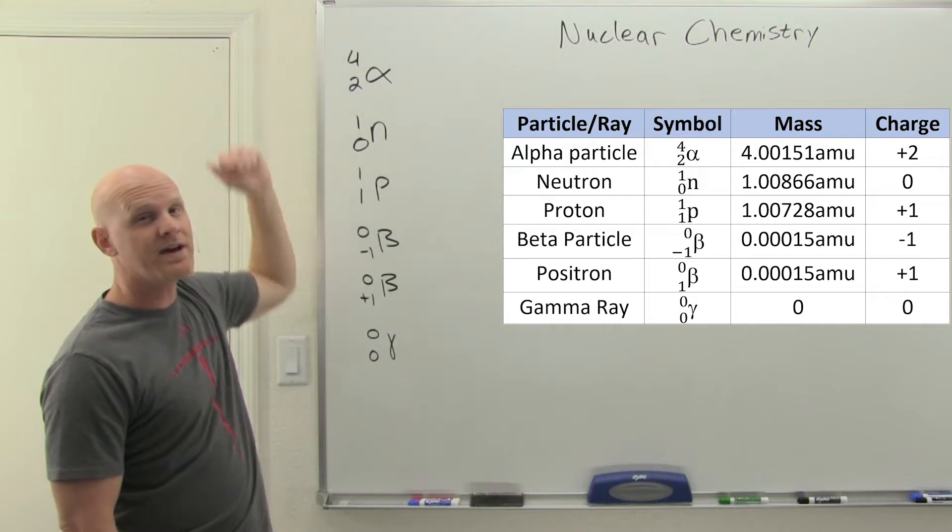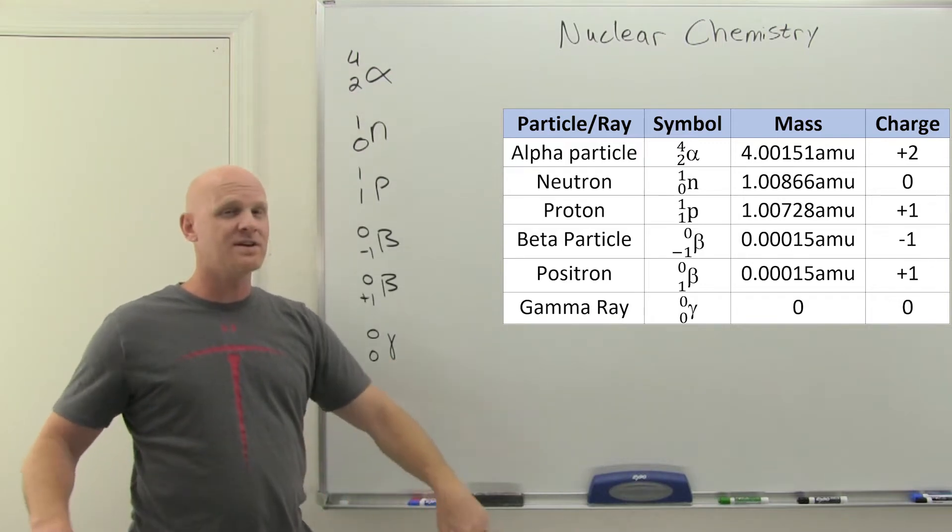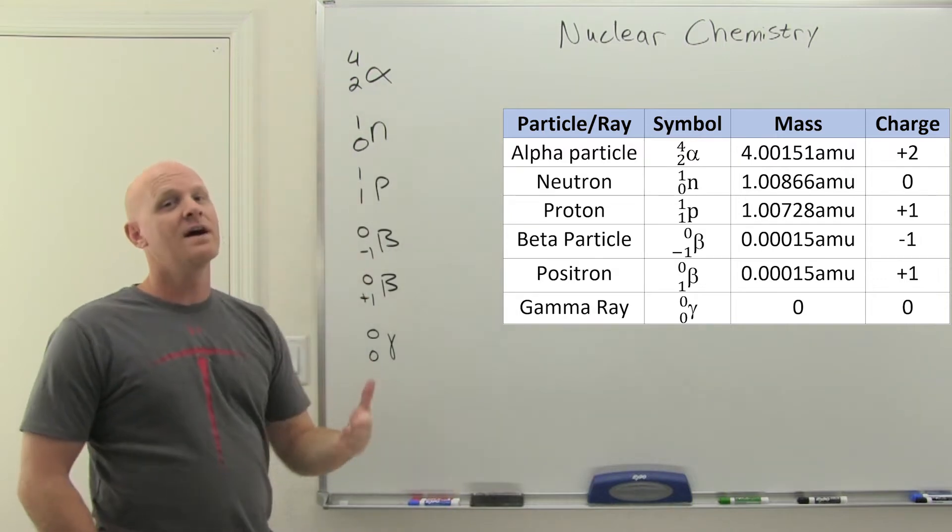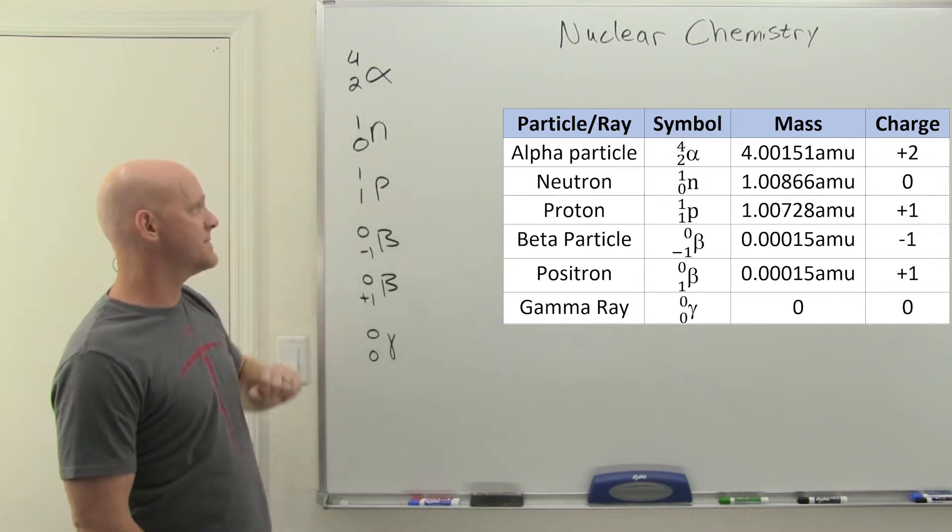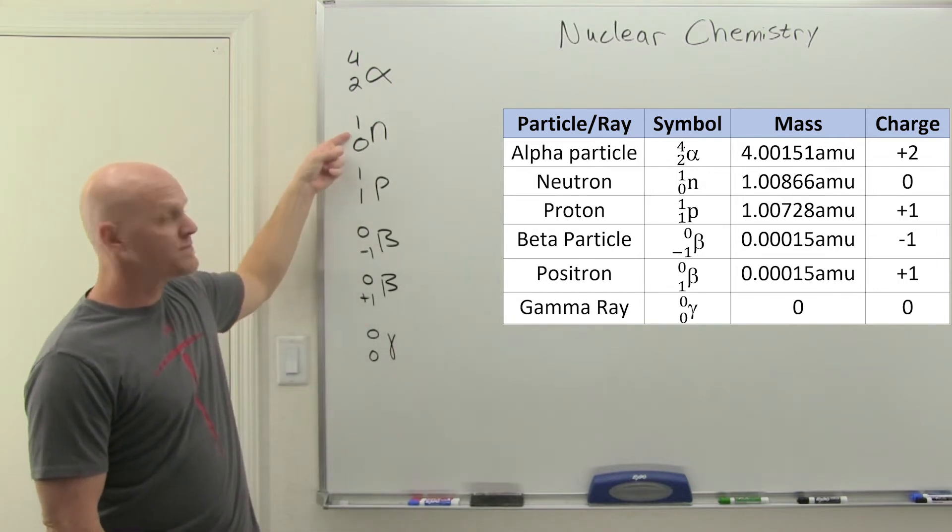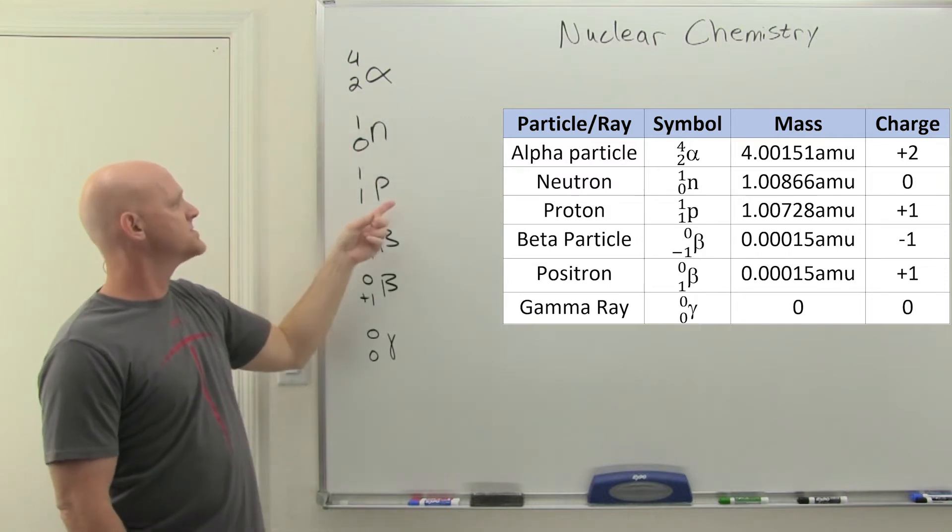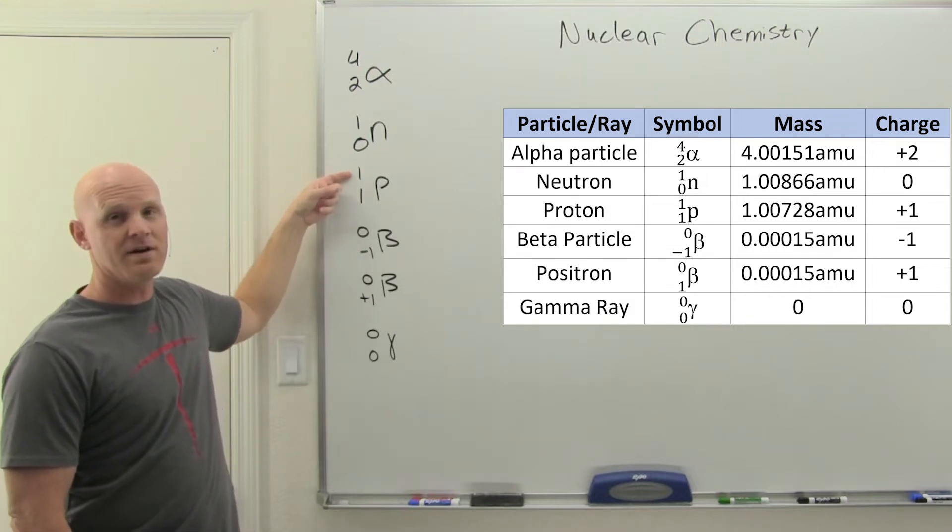That's your alpha particle, the equivalent of a helium nucleus. Keep in mind it is not the same as a helium atom, because this does not have any electrons. A helium atom has a nucleus and electrons - this is just the equivalent of the nucleus. Here we've got the neutron with no charge but a mass number of one.